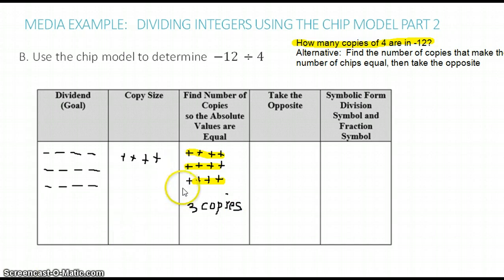Now we want to take the opposite. So taking the opposite of all of these positive CHIPs gives us the negative CHIPs, which was our goal, 12 negative CHIPs. So we took the opposite of three copies, or equivalently negative three copies.